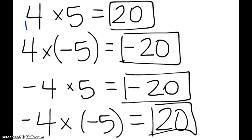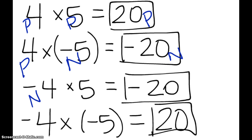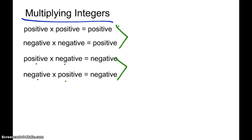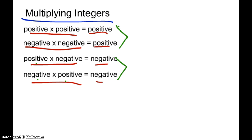So just to summarize: a positive times a positive gives us a positive; a positive times a negative gives us a negative. When multiplying integers, a positive times a positive and a negative times a negative both give you a positive. When you have the same sign, your answer is positive. When you have different signs, your answer is negative.